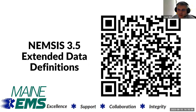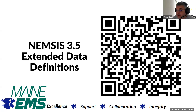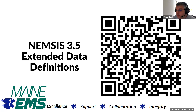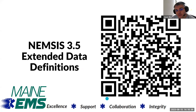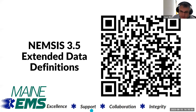One more QR code coming at you — this is the extended data definitions. What the NEMSIS 3.5 data dictionary does is tell you what the element means and the options available. The extended data definitions will tell you what specific values mean — for instance, eResponse.05 had an option for 'support services,' and the extended data definitions will tell you what that means. I'd encourage everyone to scan this QR code if you have the opportunity.